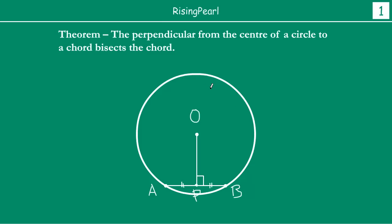The theorem holds for any chord you draw in the circle. It does not matter where or what type of chord you draw. For any chord, if you drop a perpendicular from the center such that the angle is 90 degrees, the point where it meets the chord bisects the chord. This is what the theorem is telling us and this is what we have to prove.